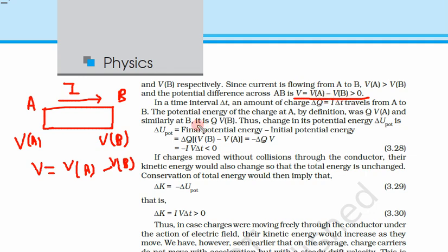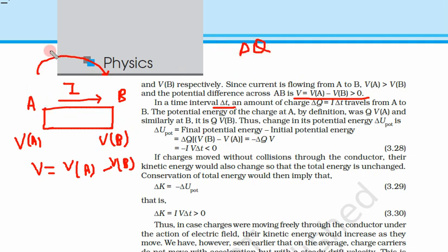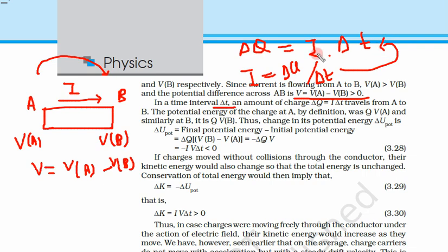Now let us take a very small time interval delta t. In this small time, a small charge delta q flows from A to B. That charge is delta q = I·delta t, because I = delta q / delta t, so delta q = I·delta t.